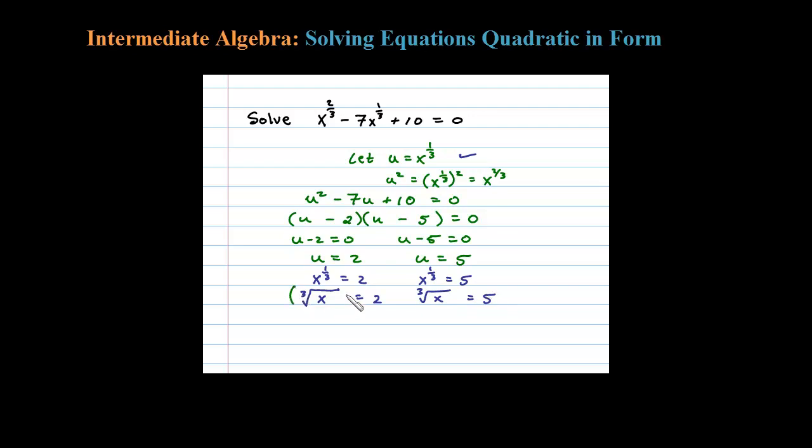If we simply cube both sides, we get x equals 8. On this second equation, cubing both sides, x could also equal 5 to the 3rd, which is 125. You can check those and both of them work into the original.